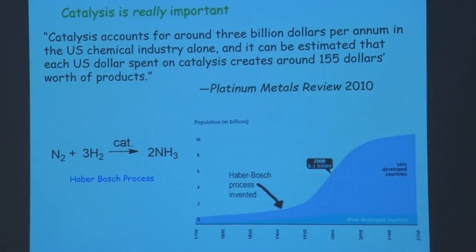Crop yields went up astronomically. People could reproduce, mortality rates decreased, people live longer — there are simply more people. About 2% of the world's energy goes to fixing nitrogen every year. The estimates are that about 80% of the nitrogen in your body is the result of the Haber-Bosch process. If we stopped doing this right now, approximately half the people on earth would die because they could not feed themselves. The scope and scale of catalysis is quite large.